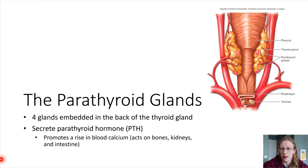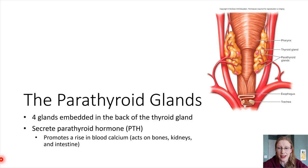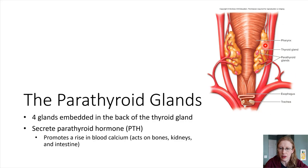The parathyroid glands — this will be a short little section. These are tiny little glands and they are embedded in the back of the thyroid gland. What we're looking at here is a posterior view of the thyroid. Here's the thyroid gland, those two lobes we mentioned, we're just looking at it from the back. And we've got these four little red things — in this picture they look red — those are the parathyroid glands.